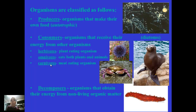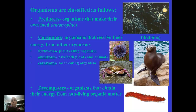Organisms are classified as the following. There are producers — organisms that make their own food, known as autotrophic. In this image you see diatoms, which do make their own food. Then there are consumers that have to consume other organisms to receive the nutrients they need. There are three types: herbivores, which eat only plants; omnivores, which eat both plants and animals; and carnivores, which eat only meat. Humans have evolved to be omnivores. Some humans choose to be herbivores, and some choose to be carnivores, which isn't the most healthy. And then there are decomposers, which are essential because they break down dead organisms and return the nutrients to the nutrient cycles we learned about in the climate unit.